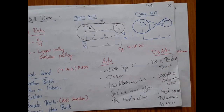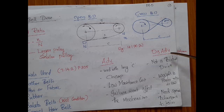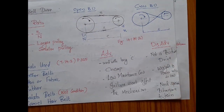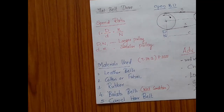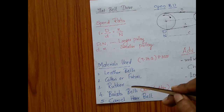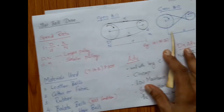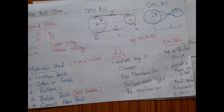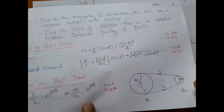Coming to the disadvantages: they are not a positive drive, which I will explain later. The power-to-weight ratio is also very small. Another important disadvantage is that we need special techniques to join the belt, because the belt material is not metallic, so we definitely need special mechanisms for the joining purpose.